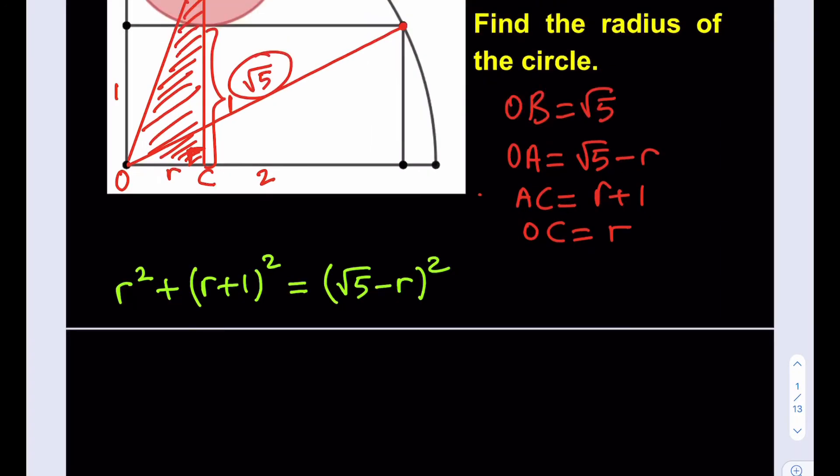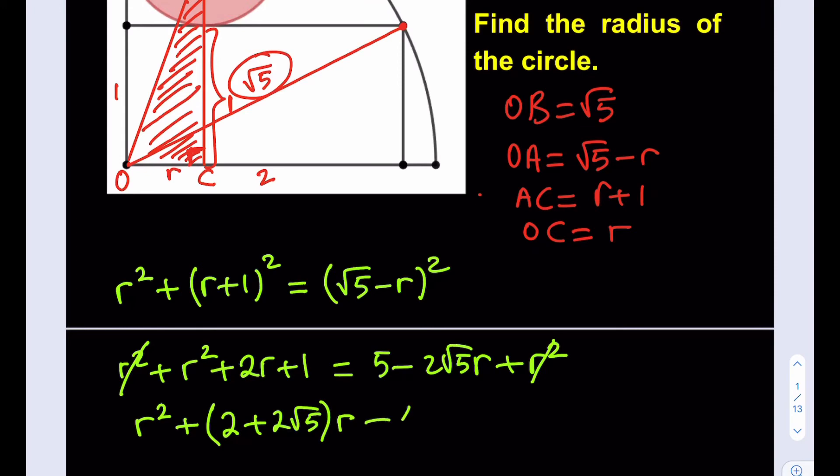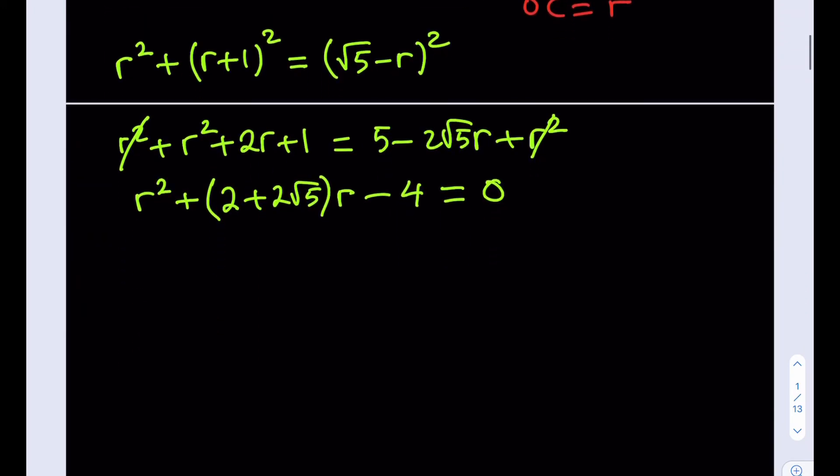So, what am I going to do next? I'm just going to expand this. R squared plus R squared plus 2R plus 1 is equal to 5 minus 2 root 5R plus R squared. One of the R squared is going to cancel out. Let's go ahead and put everything on the left-hand side and get a full quadratic. This is going to look like R squared plus 2 plus 2 root 5 quantity R, and then I have 1 minus 5, which is going to be negative 4. So I just need to solve for R here.